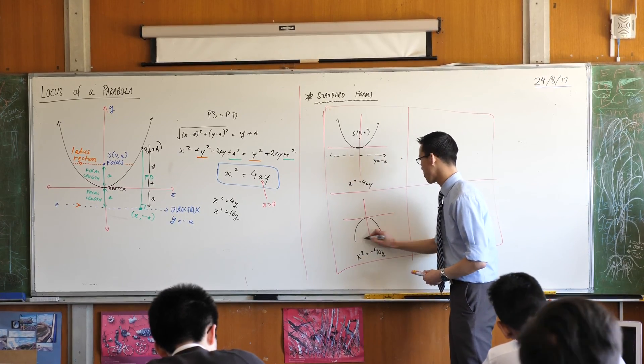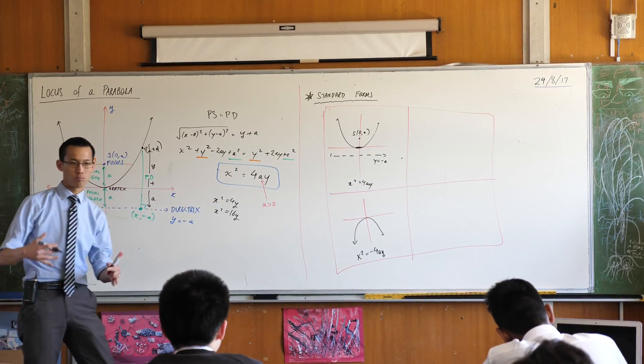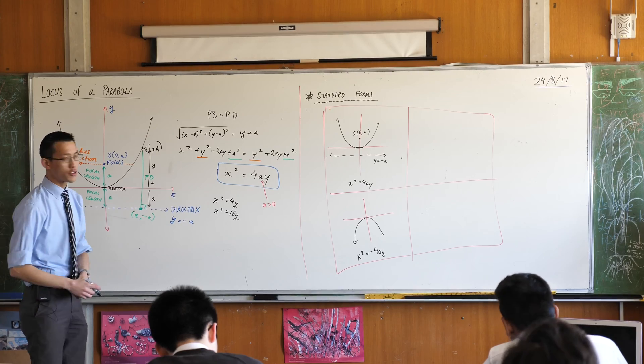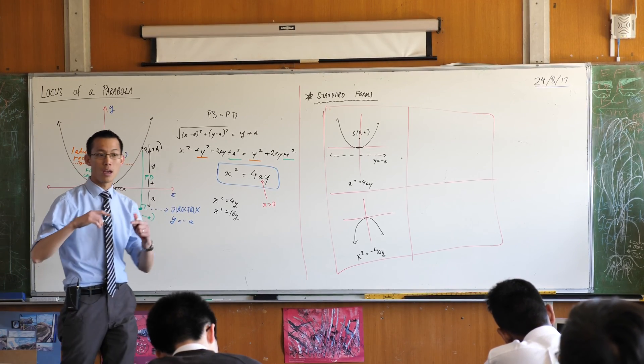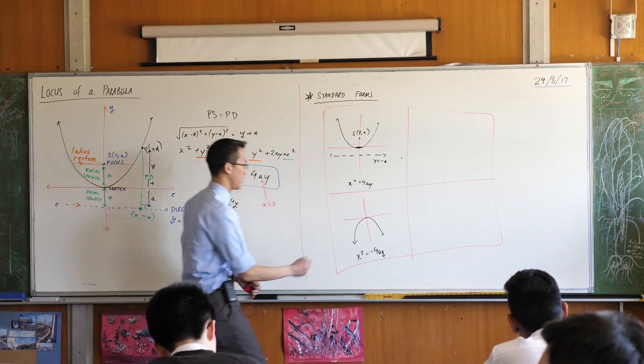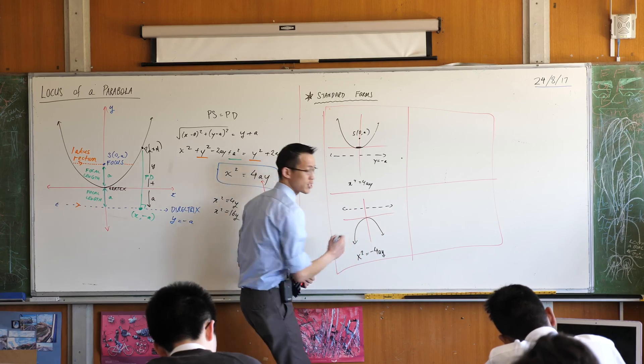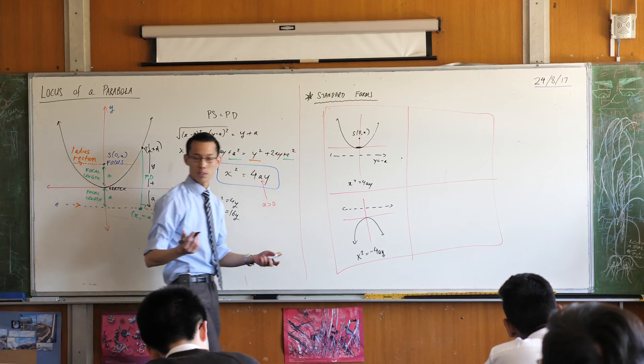This is the shape of course we would get. But now my directrix and my focus are all swapped around, right? The directrix is not going to be underneath the parabola, the directrix is going to be above and pushing the parabola facing it downwards. So you can see its equation would not be y equals negative a. Its equation would be just positive a.